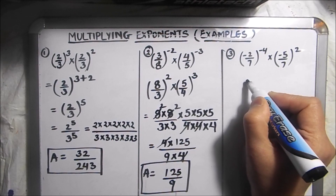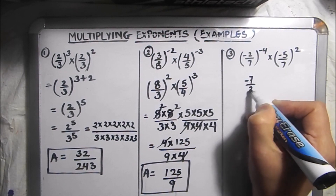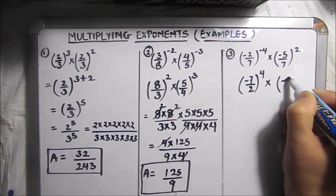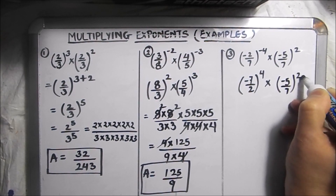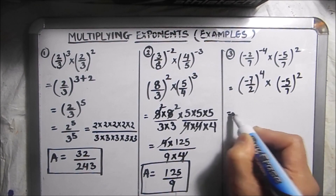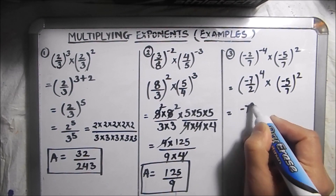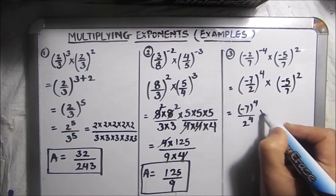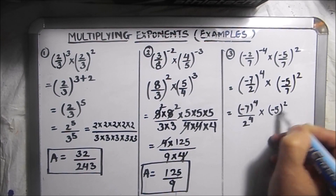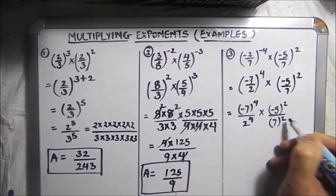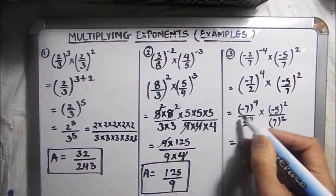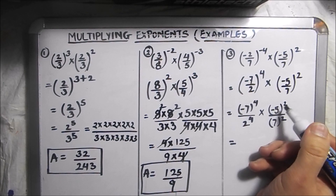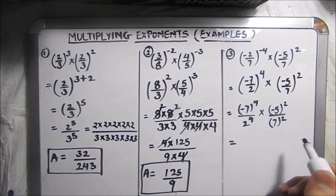Now we have minus 7 over 2 to the power 4 times minus 5 over 7 to the power 2. This becomes minus 7 to the power 4 over 2 to the power 4, times minus 5 squared over 7 squared. These are negative numbers but their exponents are even, so we will get positive numbers and need not worry about the signs.